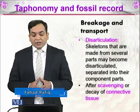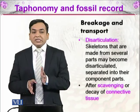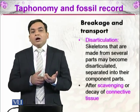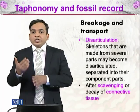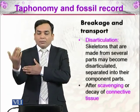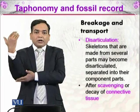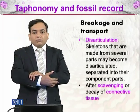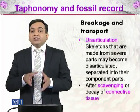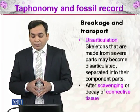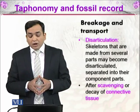First we will discuss disarticulation. Wherever the prefix 'dis' comes, that means opposite of what follows. So disarticulation is the opposite of articulation — for example, if I am moving my arm, my forearm is articulating with my arm at the articular joint. Disarticulation means that part of the arm is separated from another part. Skeletal remains in the form of bones are dispersed; skeletons made from several parts may become disarticulated, separated into component parts.